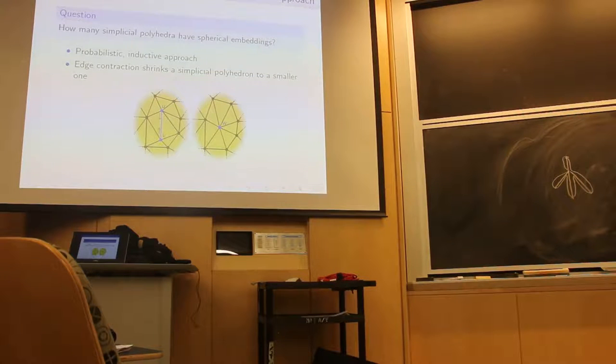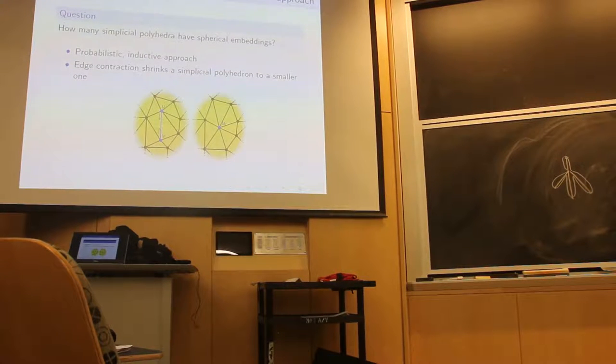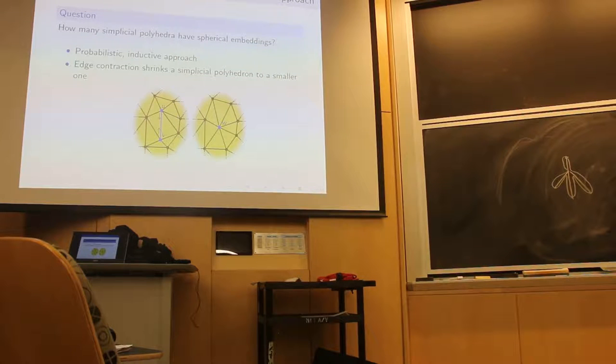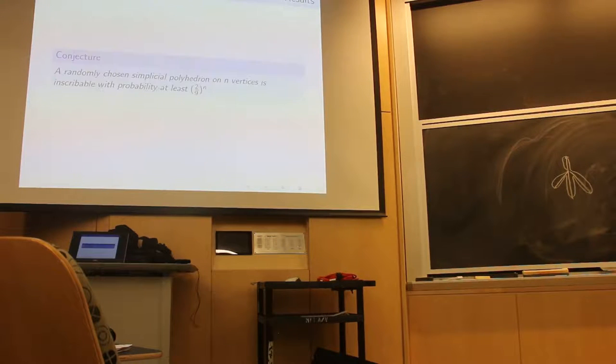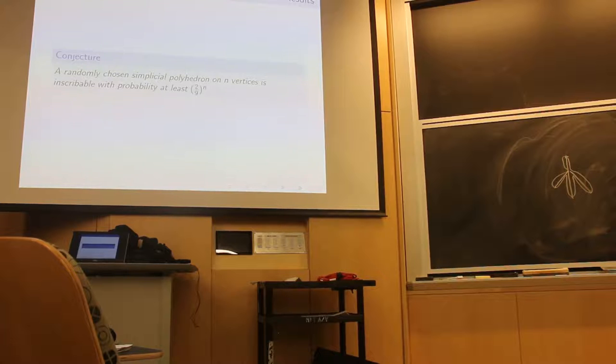And then, we measured the probability of being able to uncontract this edge and undo this operation, while still having all vertices lying on a sphere. And so, that allows us to make this claim, which is that a randomly chosen simplicial polyhedra on n vertices is inscribable with probability at least 2 over 9 to the power of n.